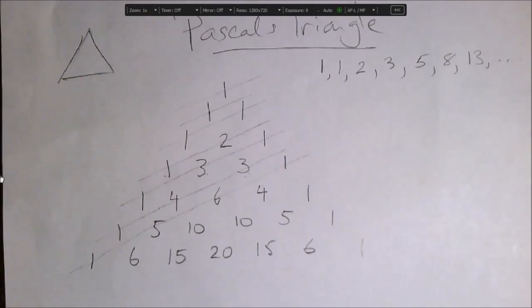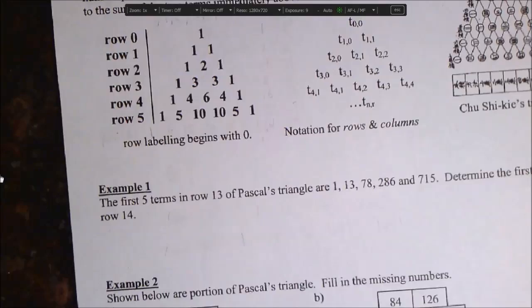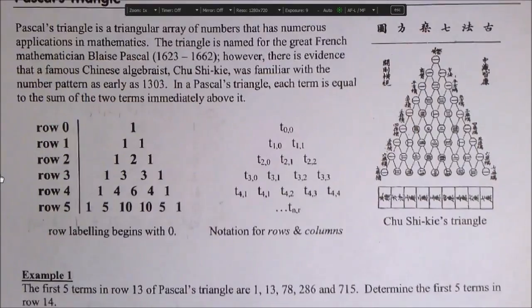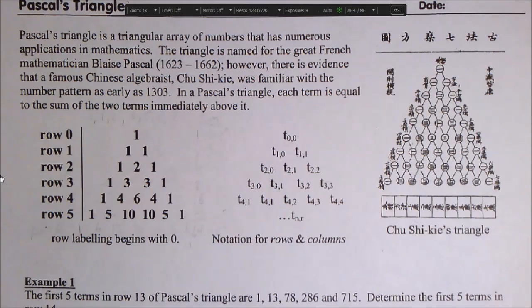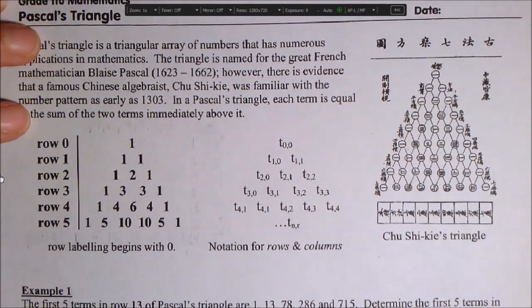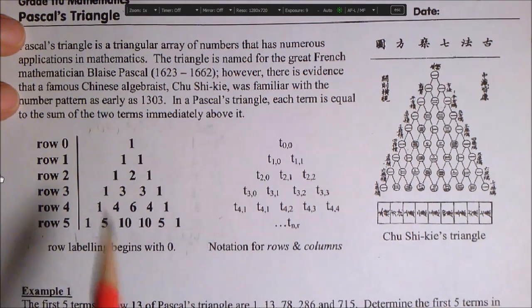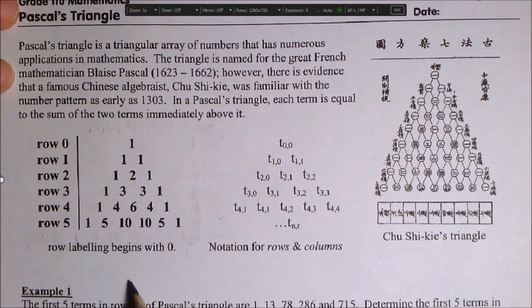So now we turn to the course pack page called Pascal's Triangle. So here it is. Okay. And it gives you some history about Pascal and actually the triangle may not have been discovered by the mathematician Pascal. It may have been discovered in China prior to that. So you can read this. So you can read this. And here's the triangle. And I just wanted to talk about how to label the terms of the triangle.